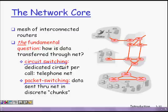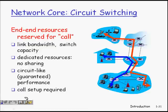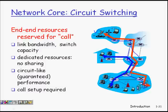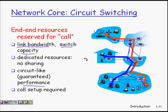In packet switching, the data is discretized into chunks known as datagrams. In a circuit switching network, for example, if a mobile is talking to a machine, there is a dedicated path through routers. All data flows through that particular path, and all resources — the link bandwidth and switch capacity — are reserved for the call and not shared with anyone.